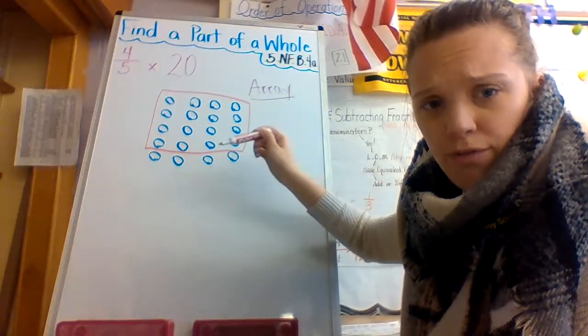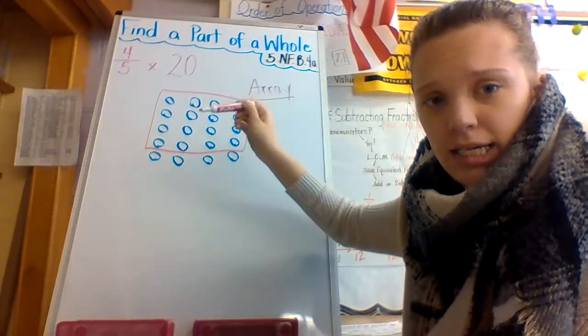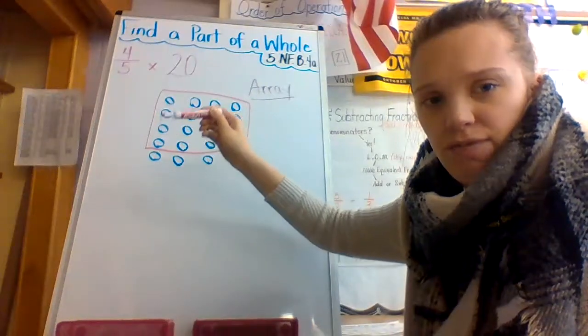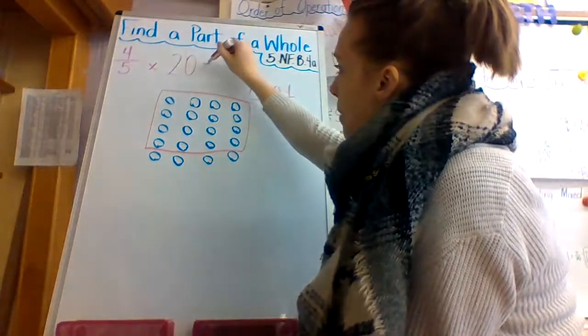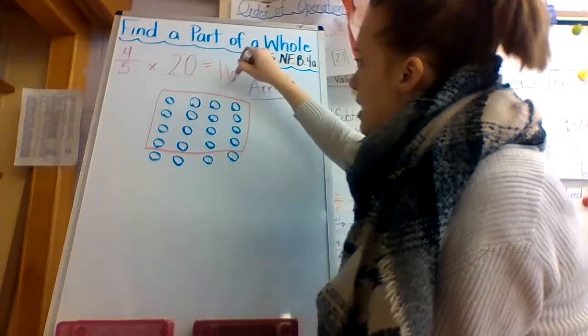Count up how many disks you have inside your array. One, two, three, four, five, six, seven, eight, nine, ten, 11, 12, 13, 14, 15, 16. So my product is 16.